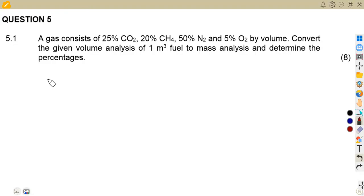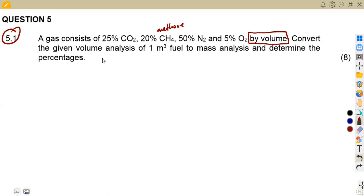That is the November 2022 exams. Let us consider question five, which is 5.1, where we are given a gas that consists of 25% carbon dioxide, 20% CH₄ — which is methane — 50% nitrogen, and 5% oxygen by volume. We need to convert the given volume analysis of one cubic meter of fuel to mass analysis, and determine the percentages.